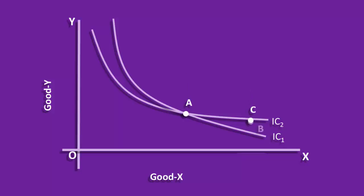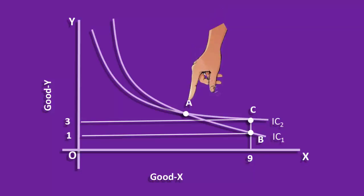Take two more combinations C and B. C and B contains the same quantity of good X, 9 units. But quantity of good Y is large in C than in B. Hence, C must offer a higher level of satisfaction than B. It means indifference curve 2 represents a higher level of satisfaction and indifference curve 1 represents a lower level of satisfaction. But A is common to both IC1 and IC2. Then it is absurd to say A will give two different levels of satisfaction simultaneously. It is impossible.